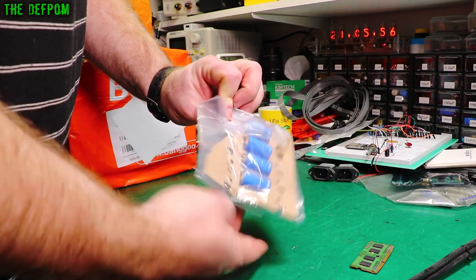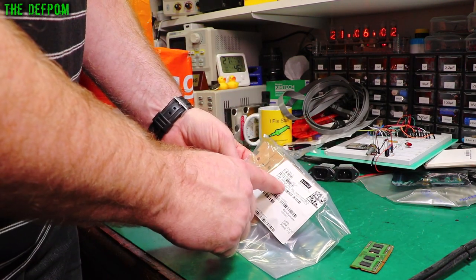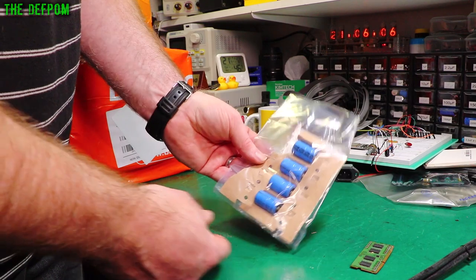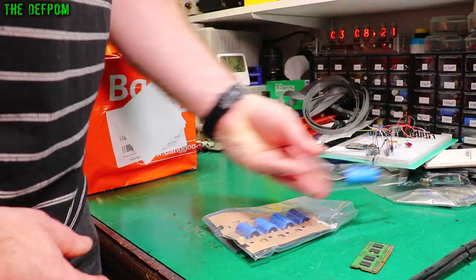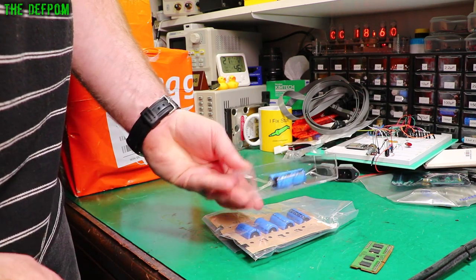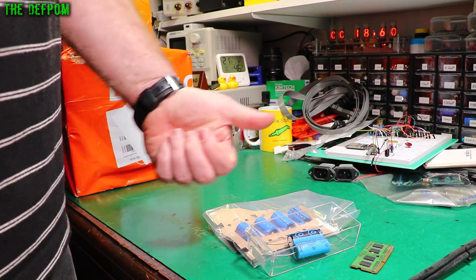So just some capacitors. Nothing too exciting here. 3300 microfarad 25 volt axial caps. I think I needed those because I have a drawer which is almost empty. But then I've only got two in there. Now I've got stock.